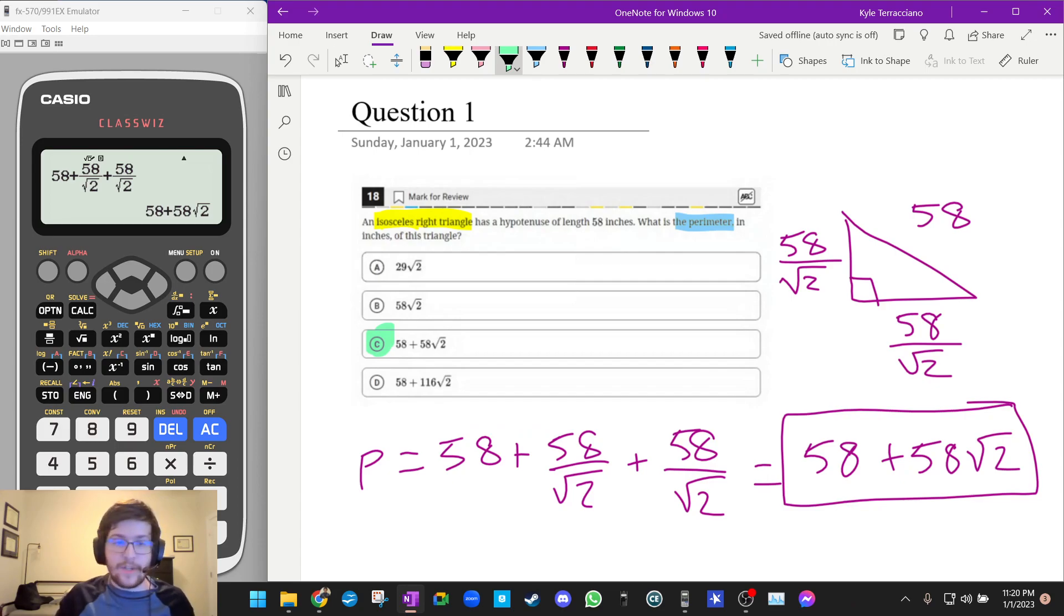So as you guys can see, now that there's no calculator section anymore, as long as you have a calculator like this, you pretty much no longer have to simplify numerical radicals. So this can be really helpful.